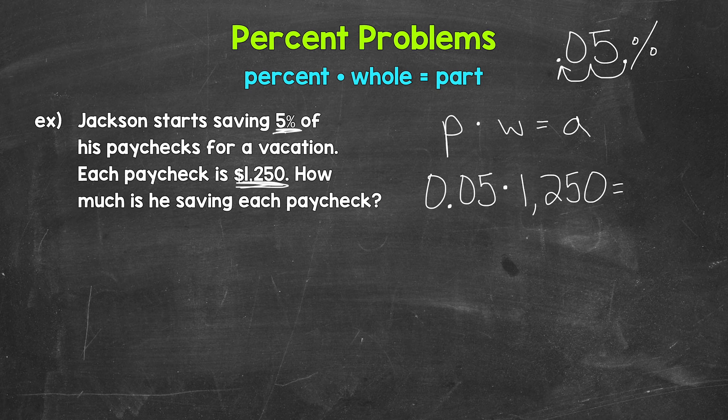So the whole is $1,250. And then the part is unknown. That's what we're figuring out. So we keep our variable of a. With this equation, we're finding 5% of 1,250 equals what? Now we solve.